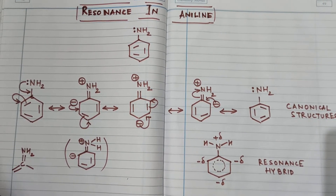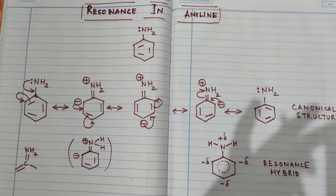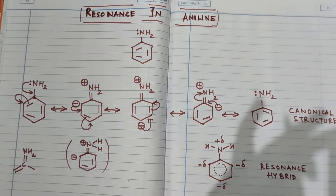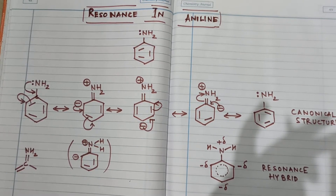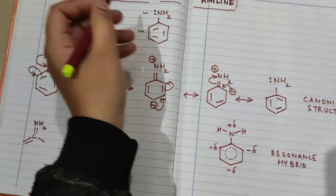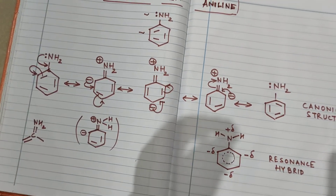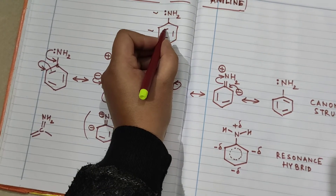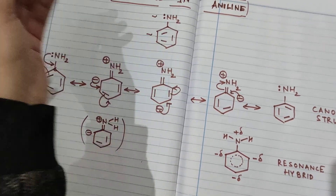The topic we're going to discuss is resonance in aniline. First of all, you need to know the structure of aniline — as drawn here, it is a benzene ring with an NH2 group attached. Whenever a benzene ring is attached to an NH2 group, it is called aniline. For resonance to happen, you need a conjugated system, which is present here as alternating double-single bonds.